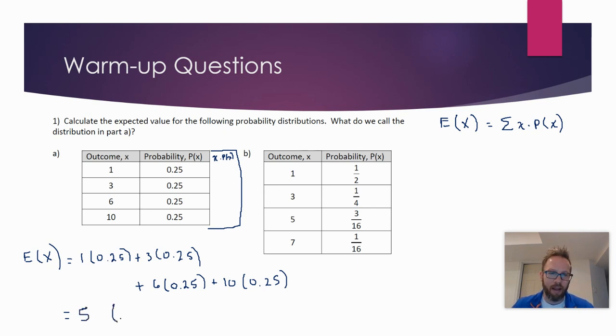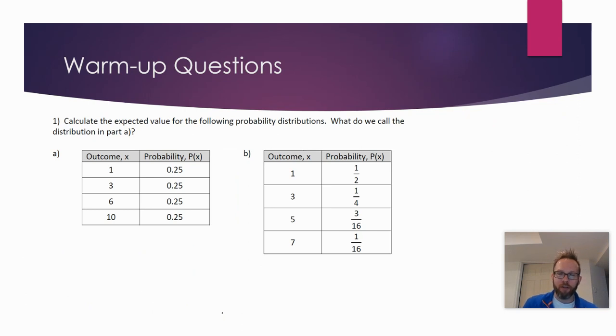And it is, because all the probabilities are the same, evidently I can't spell this morning, it is a uniform probability distribution. Why don't you give B a try. I'll do B as well. Again, pause and unpause when you're ready, or you can follow along with me. This is a solution for part B.